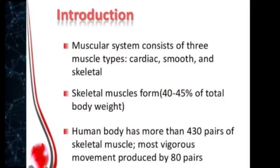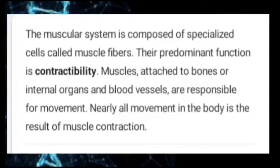Most vigorous movement is produced by 80 pairs. The muscular system is composed of specialized cells called muscle fibers. Their predominant function is contractibility. Muscles attached to bones or internal organs and blood vessels are responsible for movement. Nearly all movement in the body is the result of muscle contraction.